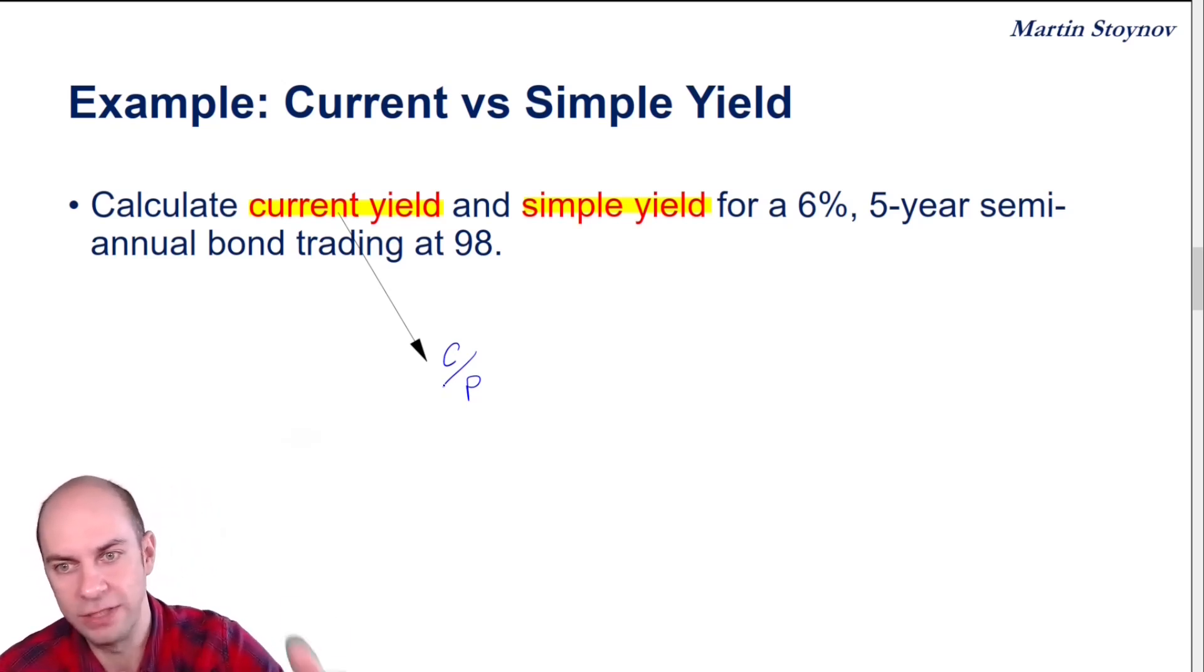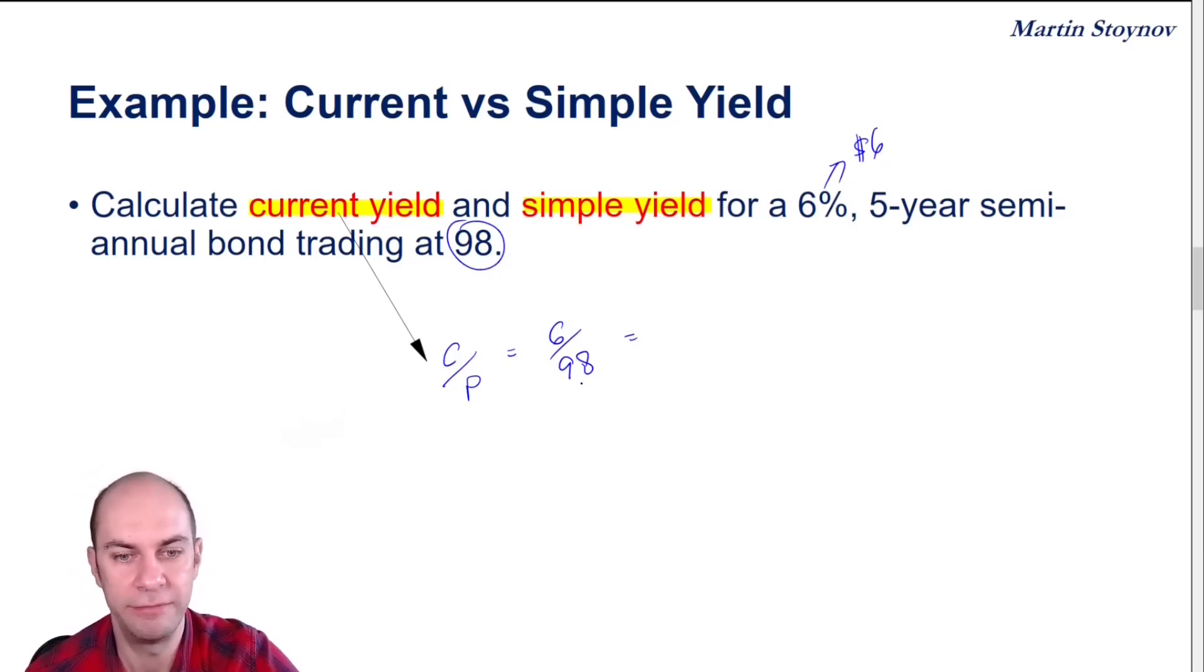So for the current yield, I have this bond that pays me 6% coupon. So the annual coupon is $6, assuming $100 of par value. My coupon is $6, my price is 98. And that's going to give me my current yield: 6.12% is my current yield.